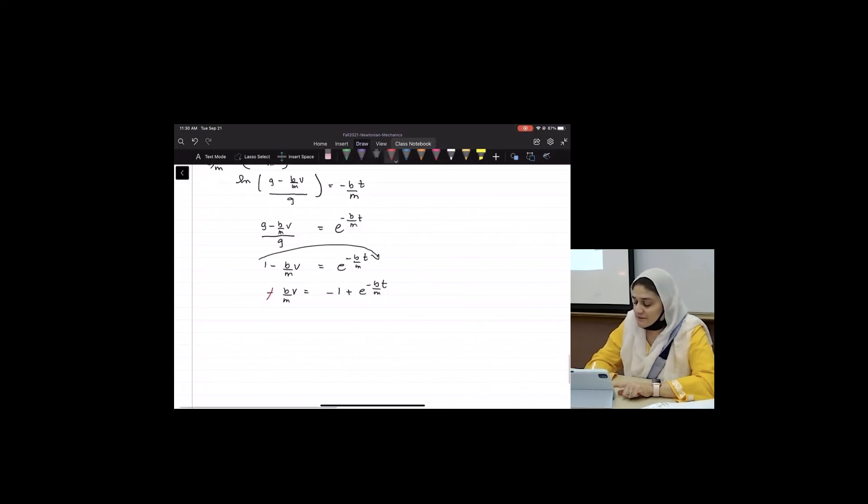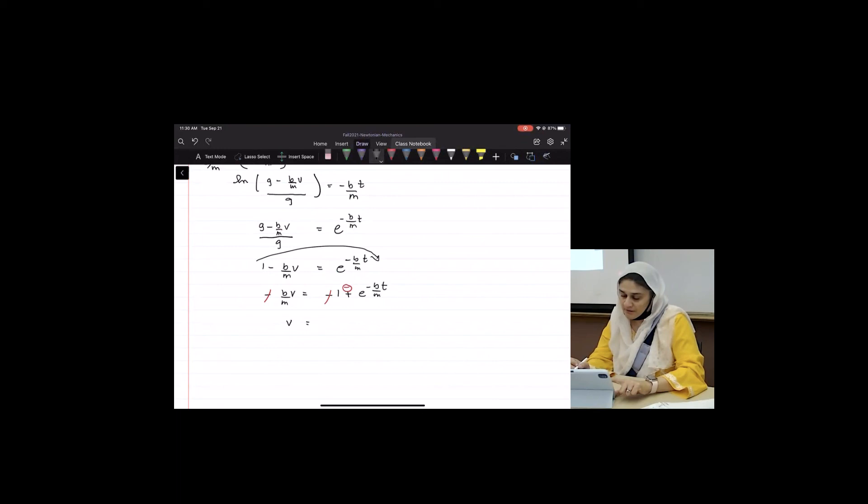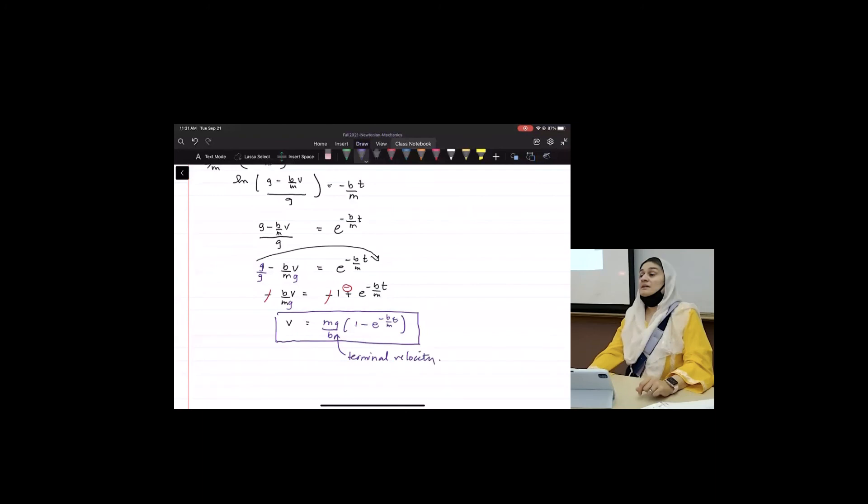Can I then write B over mv equals 1 minus E minus B over mt. I'm missing a G somewhere. There's a G there. This was G over G. That gave us the 1. So then I'll get an Mg over B times 1 minus E to the minus B over mt. And this is called the terminal velocity. This is the fastest an object can go when it's falling down. That's why squirrels don't die. Because they reach terminal velocity very quickly. At terminal velocity, objects stop accelerating.